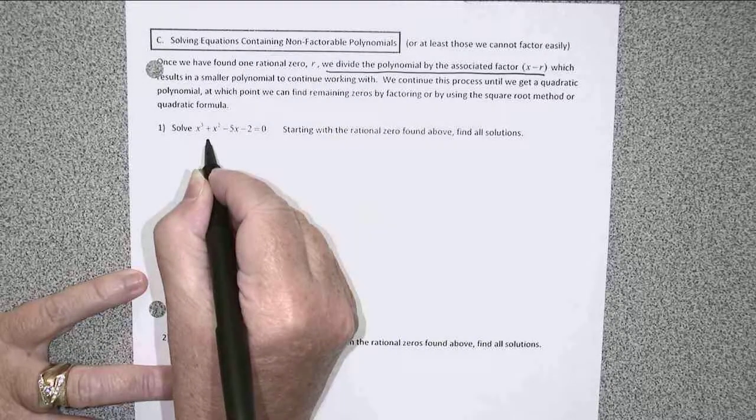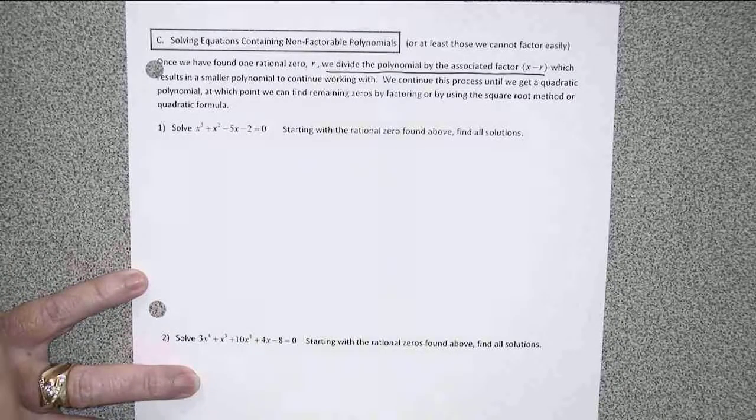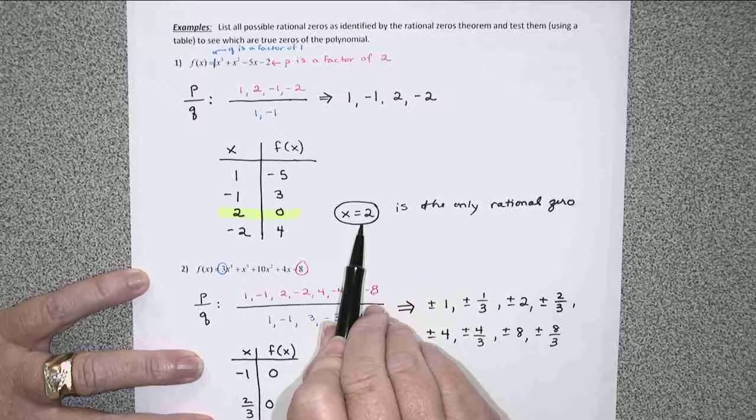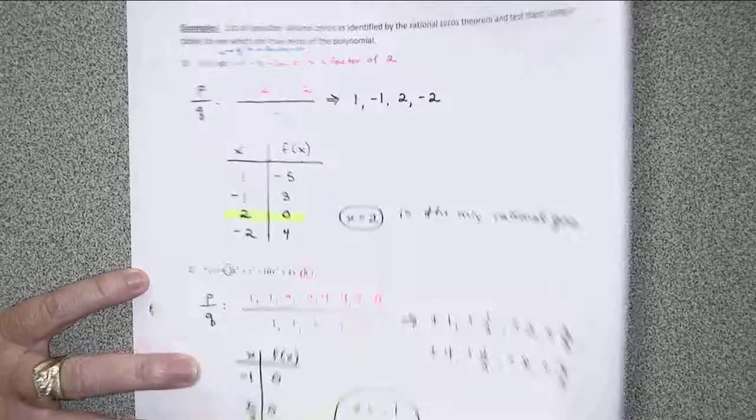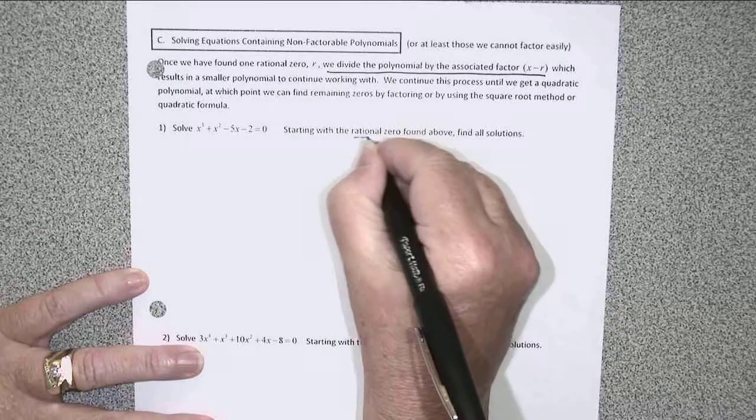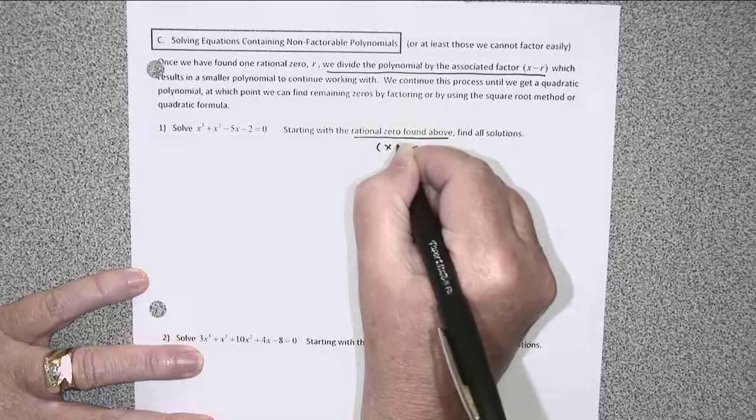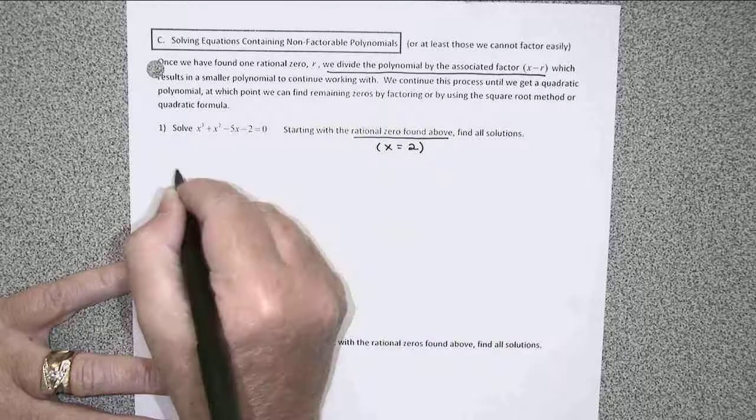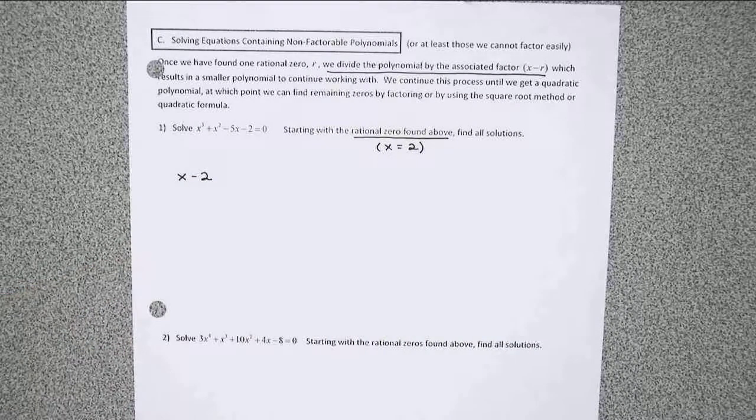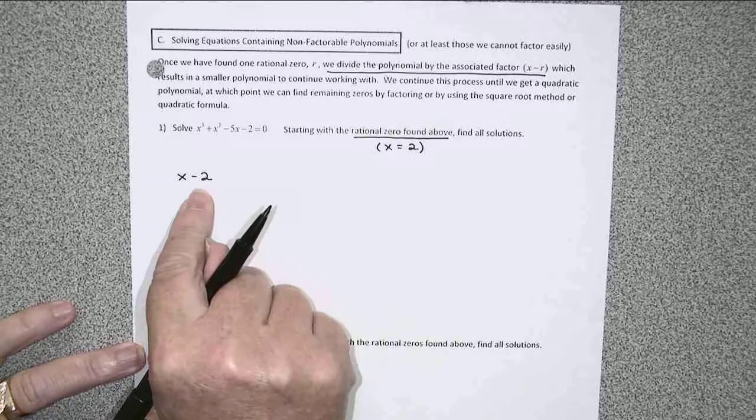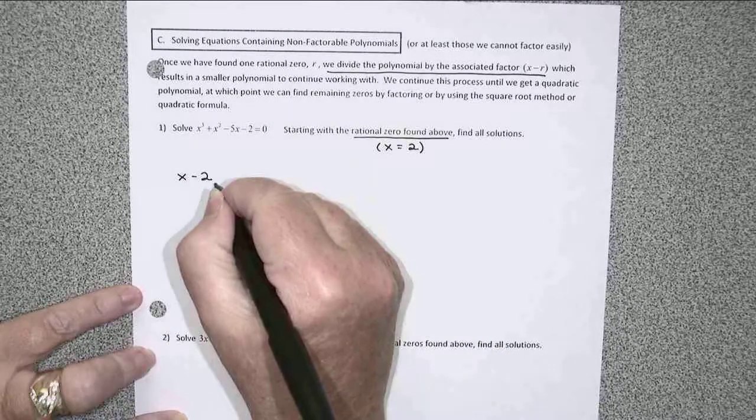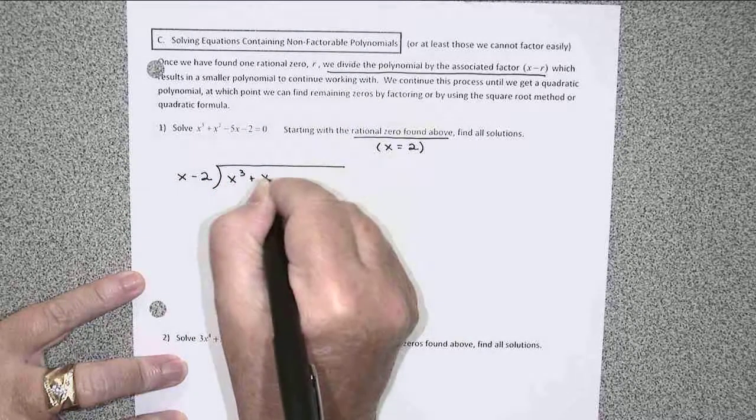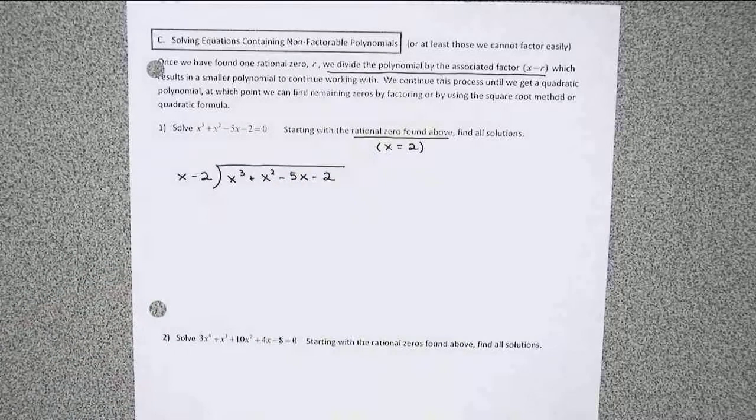So here was the example. We've started this already: x cubed plus x squared minus 5x minus 2. At the end of the last video, we discovered that x equals 2 was the only rational zero for that function. Since x equals 2 is a zero, x minus 2 would have to be a factor. If you set that equal to zero, you'd get x equal 2.